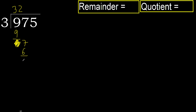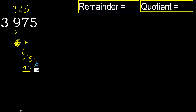Ok, subtract. Next: 15. 3 multiplied by 5 is 15, which is not greater. Subtract. Next.